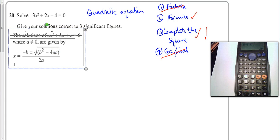And then we've just got to go ahead and put the numbers in that we need. So for us, we can see that a here is 3, b is 2, and c is minus 4.